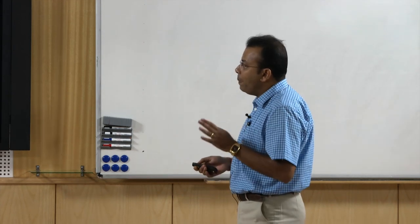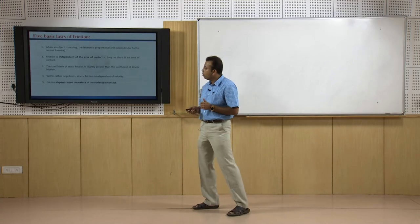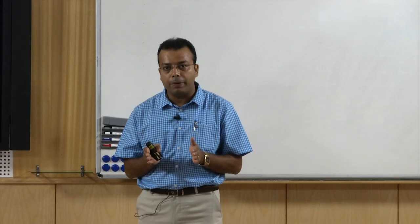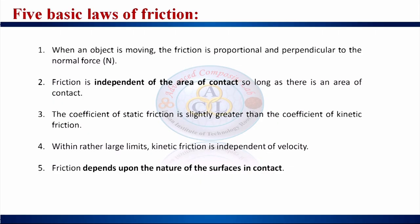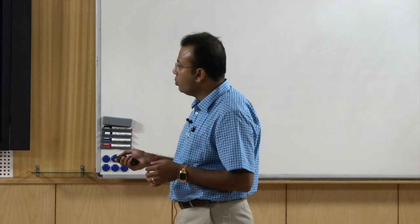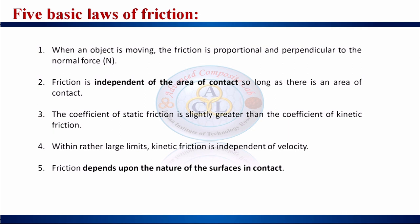There are five basic laws of friction. Law one: when an object is moving, friction is proportional and perpendicular to the normal force. Law two: friction is independent of the area of contact, so long as there is an area of contact. Law three: the coefficient of static friction is slightly greater than the coefficient of kinetic friction. Law four: kinetic friction is independent of velocity within rather large limits. Law five: friction depends upon the nature of the surface in contact.